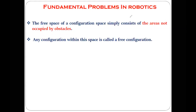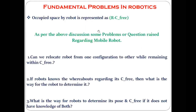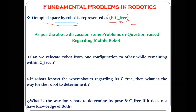One more thing you should keep in mind: the space which is occupied by the robot is represented as R minus C free. R stands for the radius. So whatever space is occupied by the robot, it is represented as R minus C free, where C free is nothing but the free space.